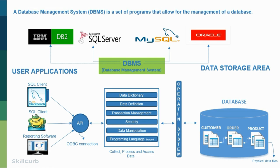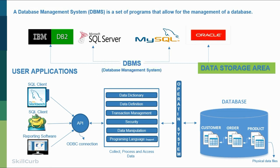The DBMS needs to interact with the operating system to get to the data storage area. The last layer is the data storage area — your physical data files will reside on the disk. Customer, order and product data is stored on the physical disk. But you would need a database management system to access this data, and you would need a client like MySQL Workbench via a SQL interface to get that data presented to you. Understanding the distinction between the user application, the DBMS, and where the physical data files are stored will really help you understand the database management system.